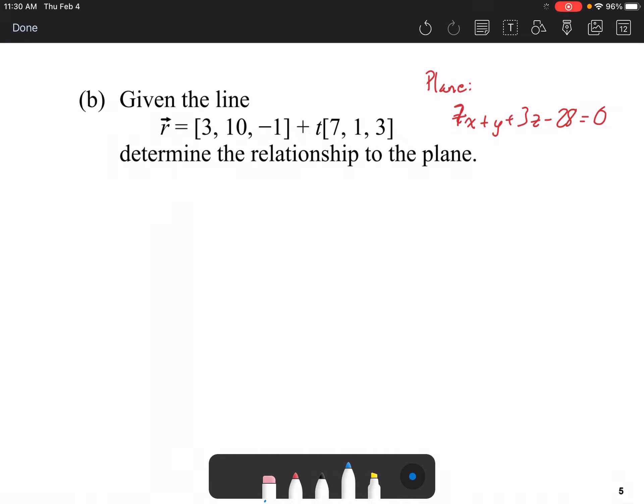Well, something you might notice right away, this 7, 1, and 3 is the same number 7, 1, and 3 right here. Well, what does that mean?